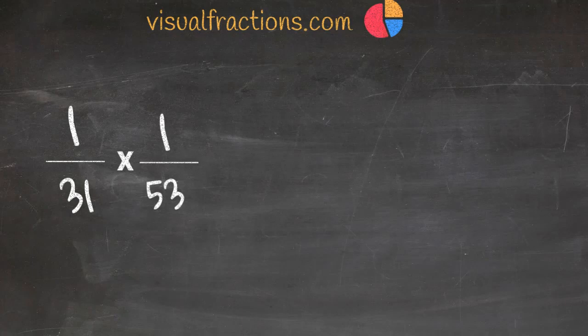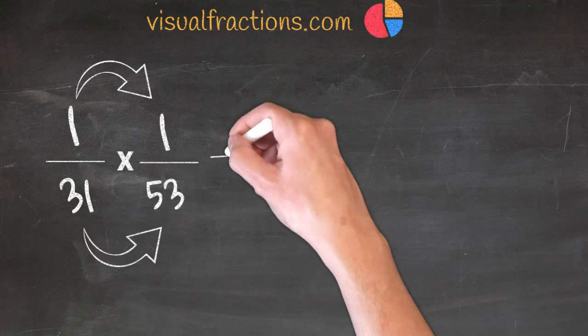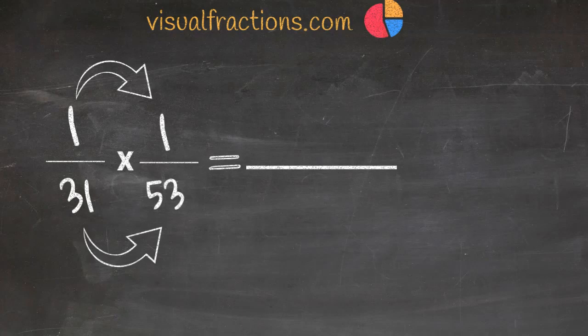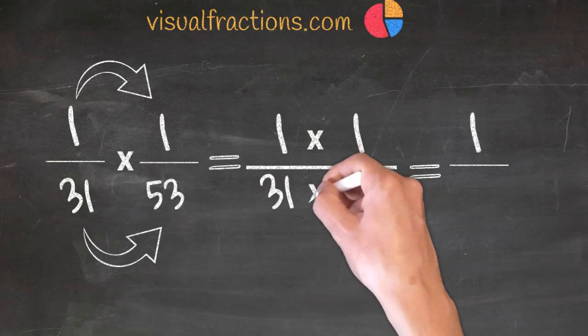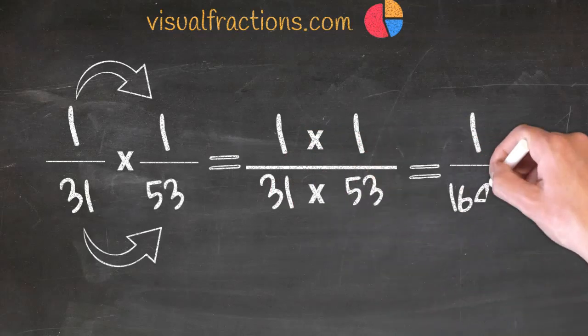To multiply these fractions, we simply multiply their numerators together and then their denominators together. So, multiplying the numerators, 1 times 1 gives us 1. For the denominators, 31 times 53 gives us 1643.